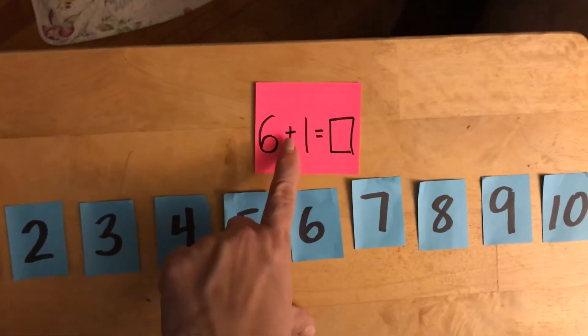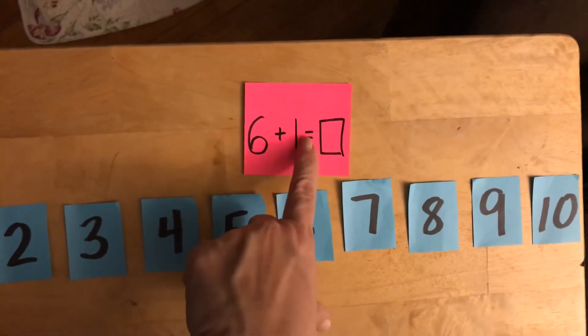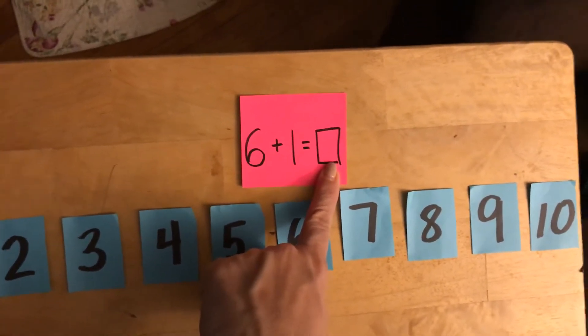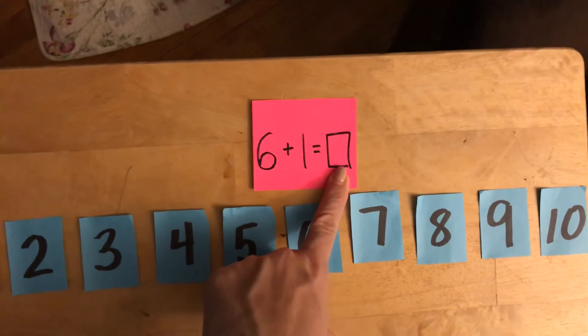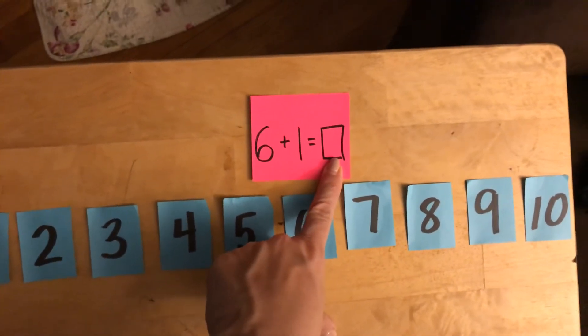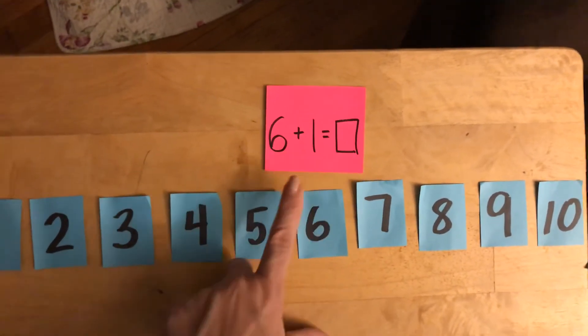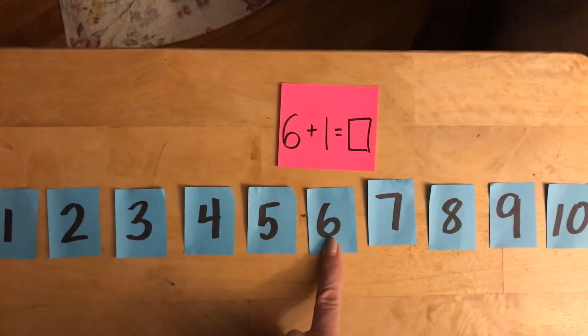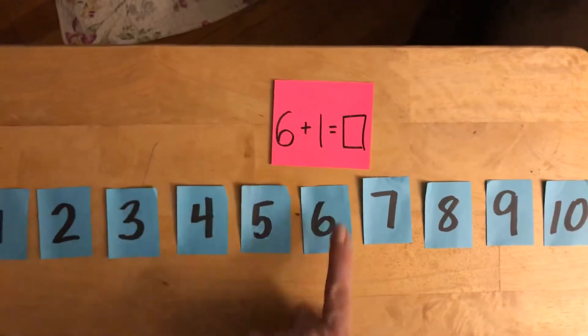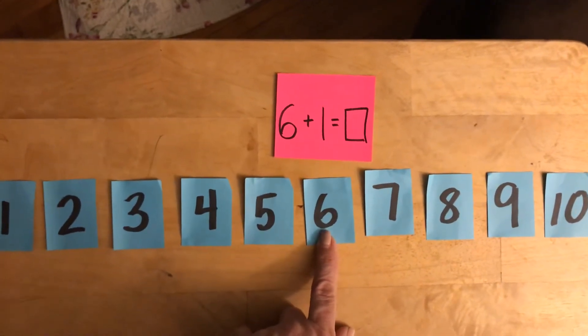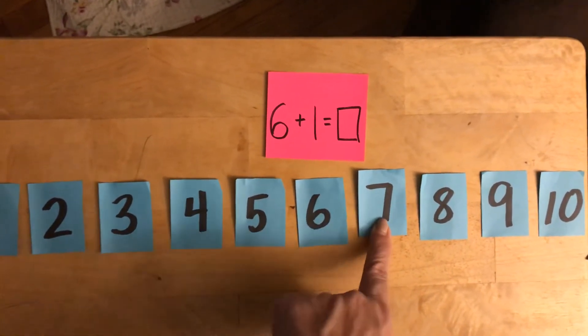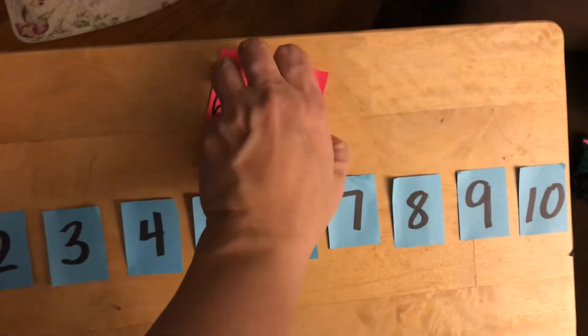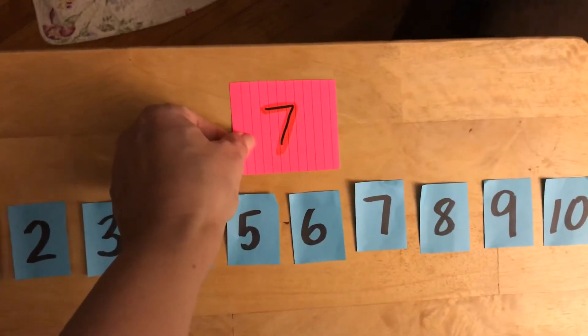6 plus 1 equals, we're looking for the sum. That's the whole amount. When we add it's called the sum. So let's see. Go to the 6 and add 1. That means make 1 hop. Here we are, number 7. And we got it.